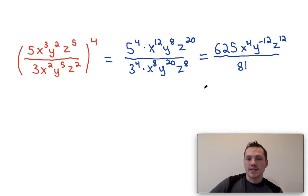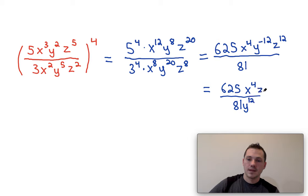Now, typically, we don't like to leave exponents negative, so what we do is we drop the y to the twelfth down to the denominator. And that would be our final answer. It's possible they ask you to simplify 625 over 81, but they don't share a common factor, so there's no way to simplify that.